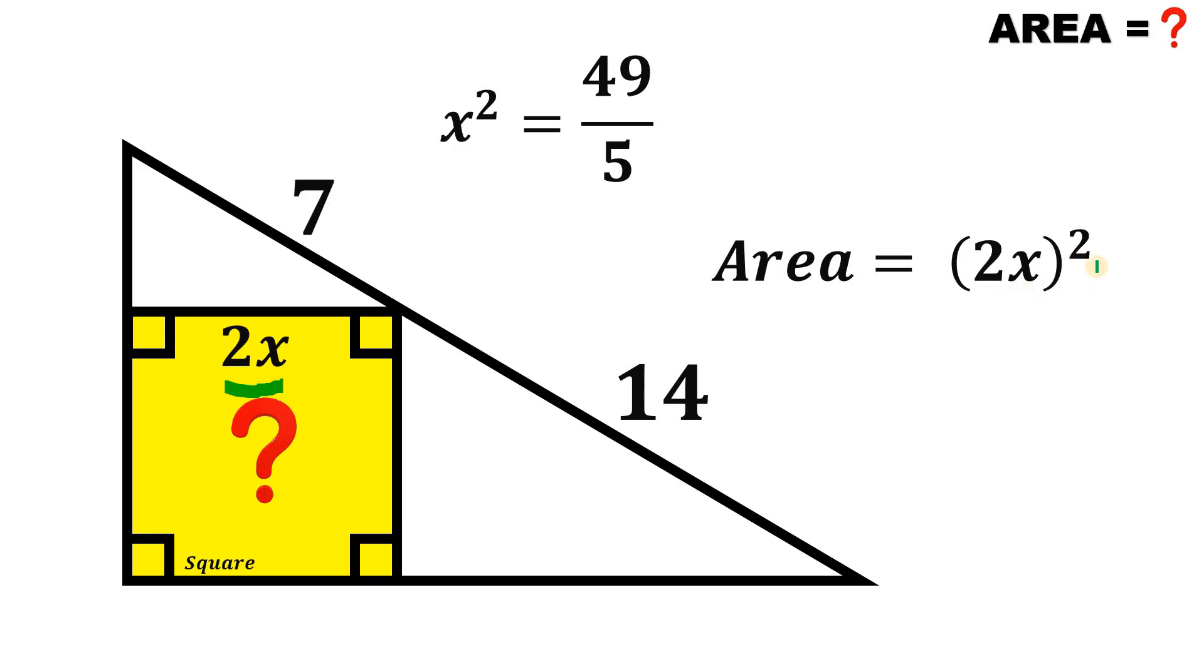Now 2x raised to the power of 2 will give us 4x squared. Now we know the value of x squared. This is 49 over 5. So if we substitute the value of x squared, we are done.